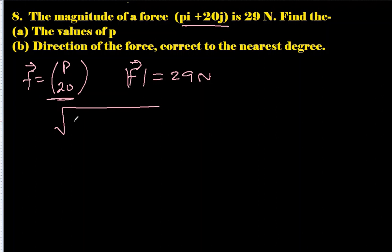Its magnitude is 29 newtons. Find the value of p. To find the magnitude of a vector we should use the magnitude formula, which is the square of the i part plus square of the j part.